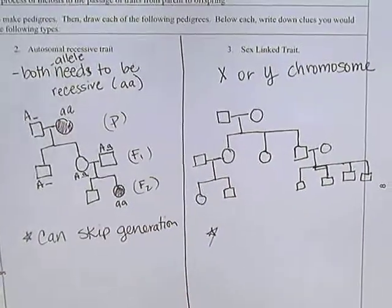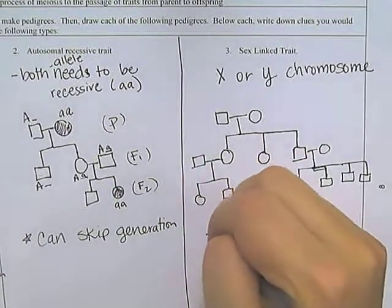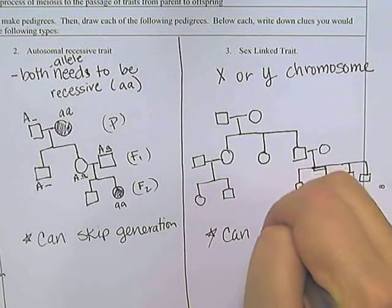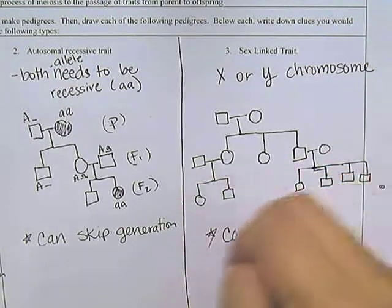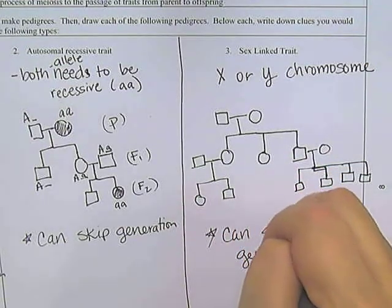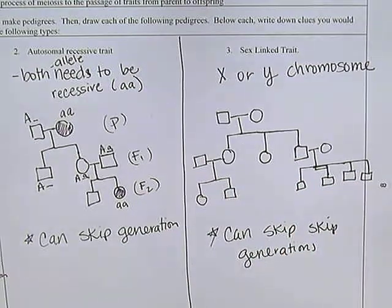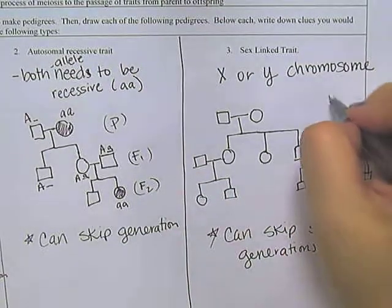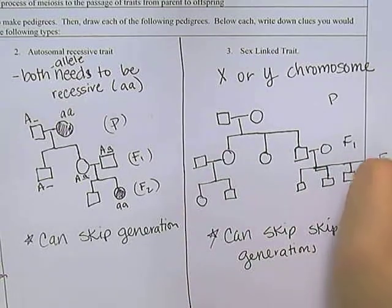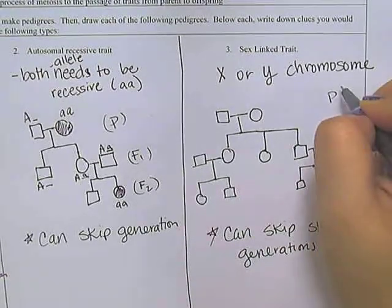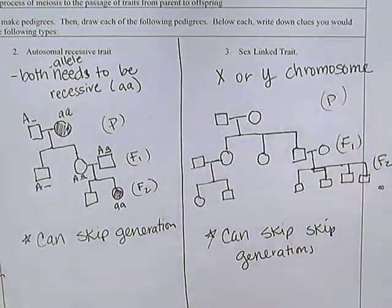All right. So for sex-linked, what you're looking for, number one, that it can skip generations. When we do this, so we have our P, F1, and F2. So here are my three generations. It can skip.